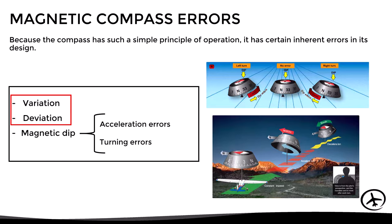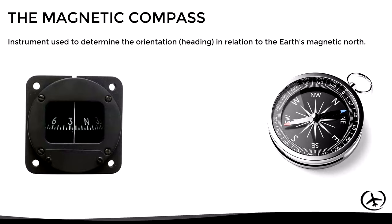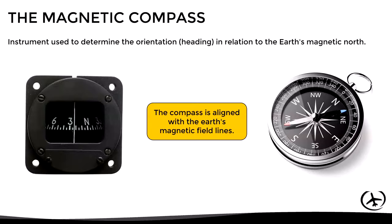Before going into detail, let's remember how a compass works. The magnetic compass is an instrument used to determine the orientation or heading in relation to the earth's magnetic north, and it manages to do so by aligning itself with the earth's magnetic field lines. Within this definition we already have the basis for understanding the first type of error: the compass points to magnetic north, not geographic north.